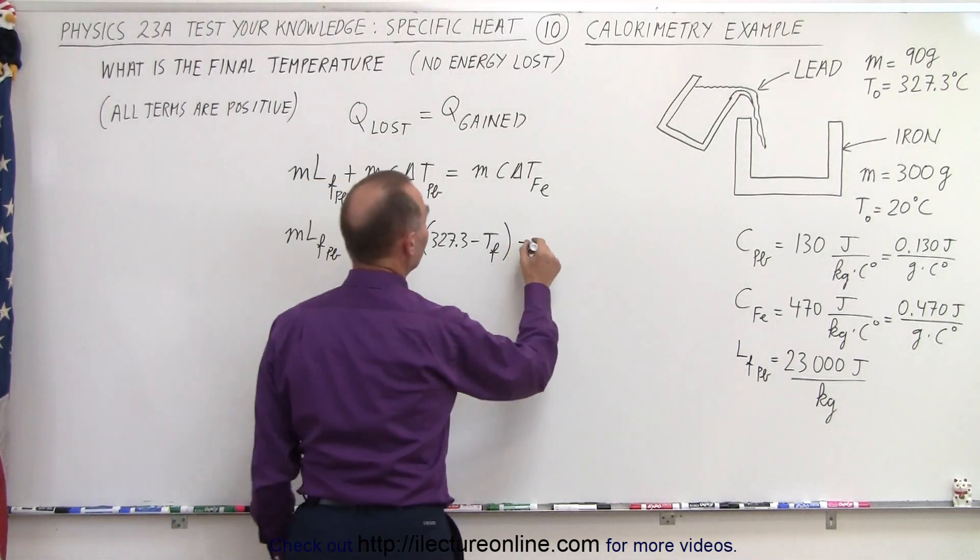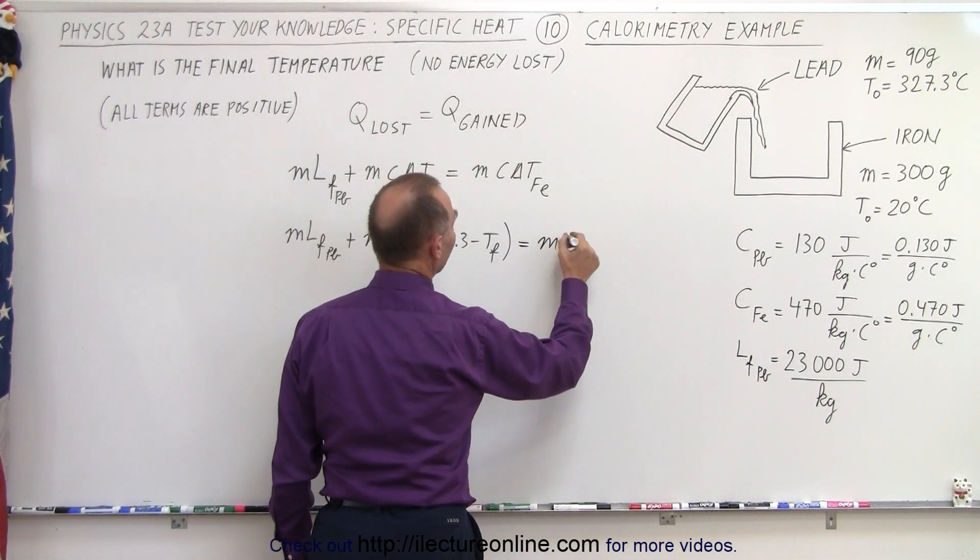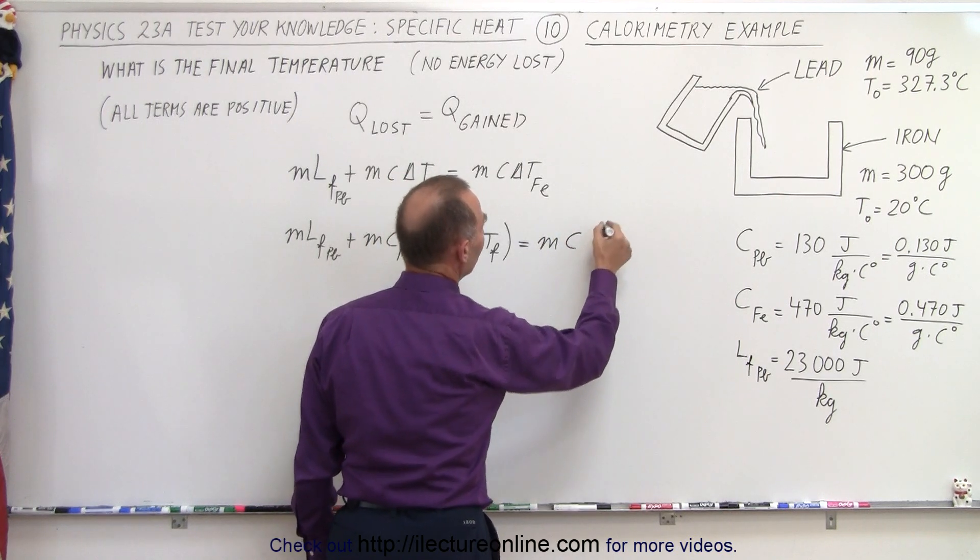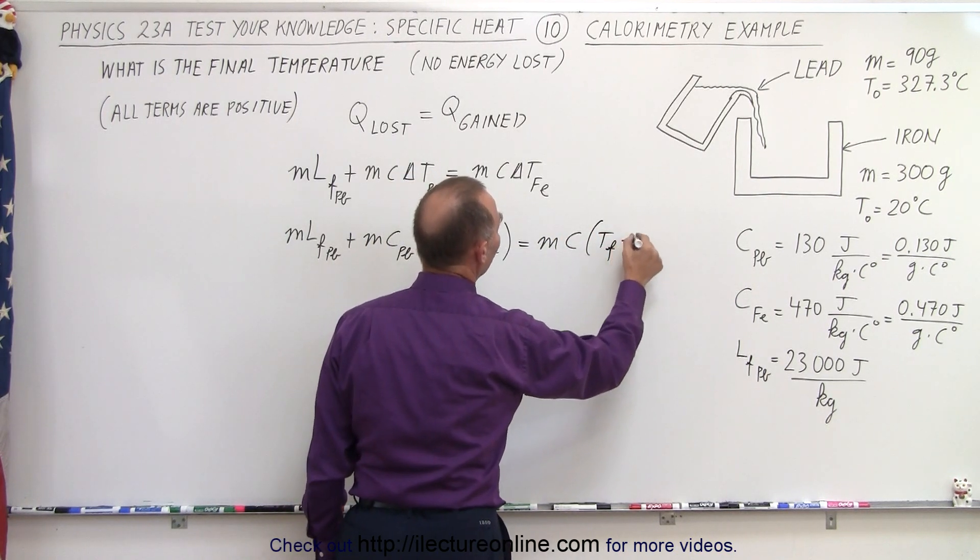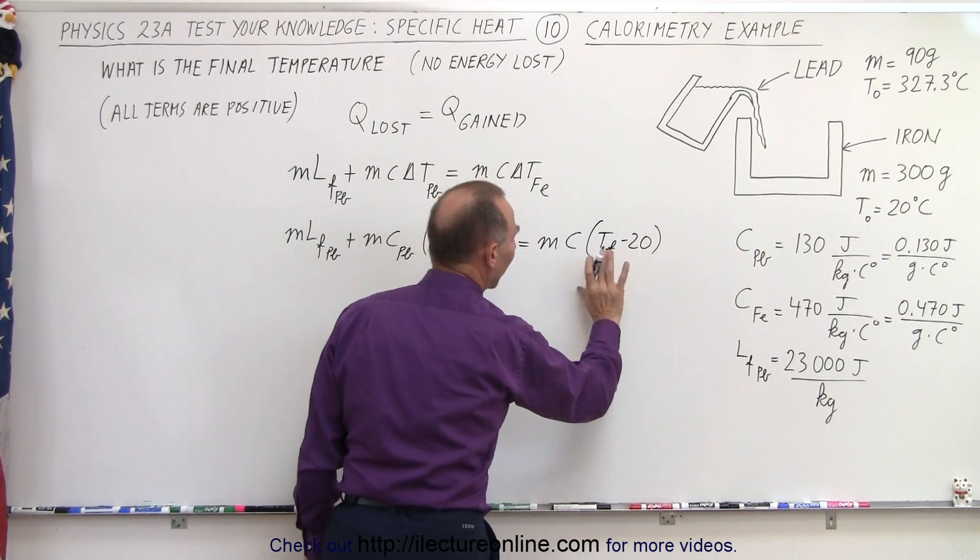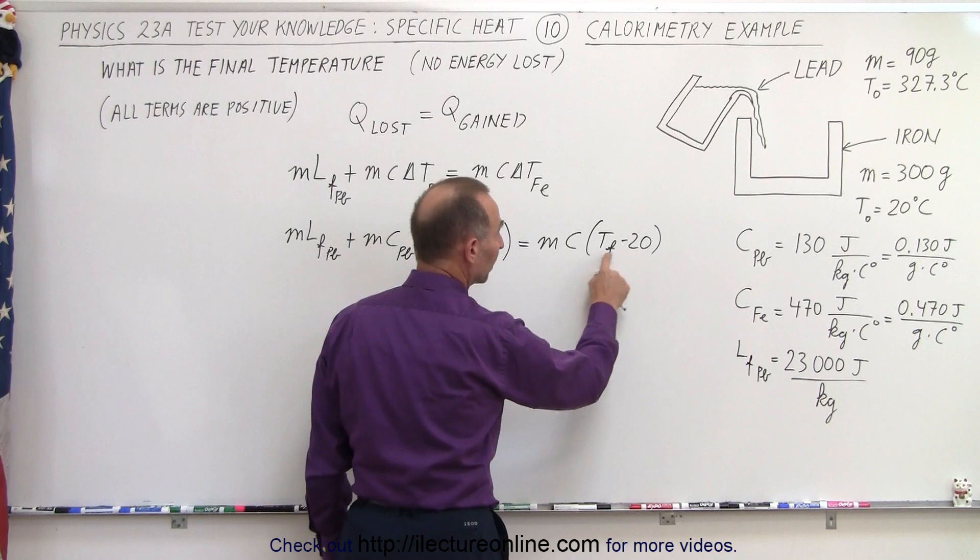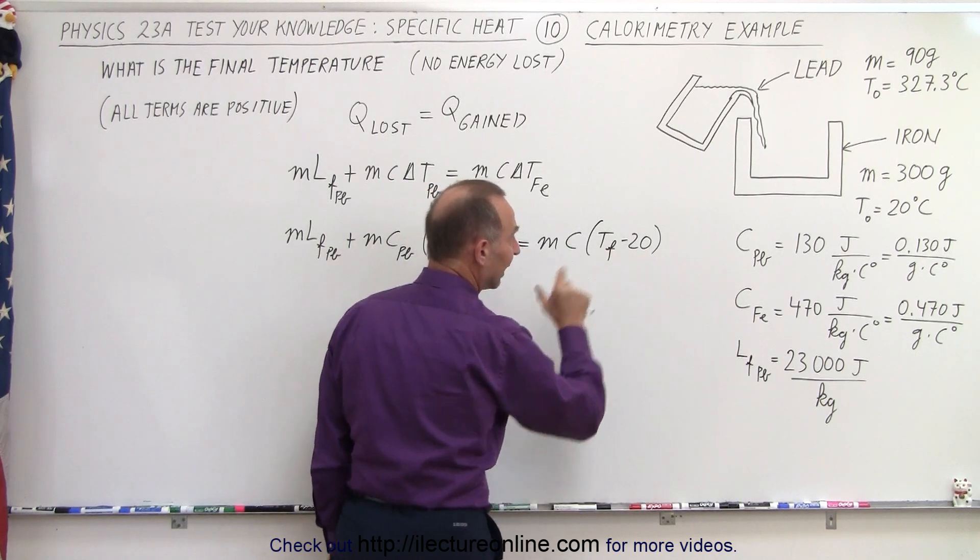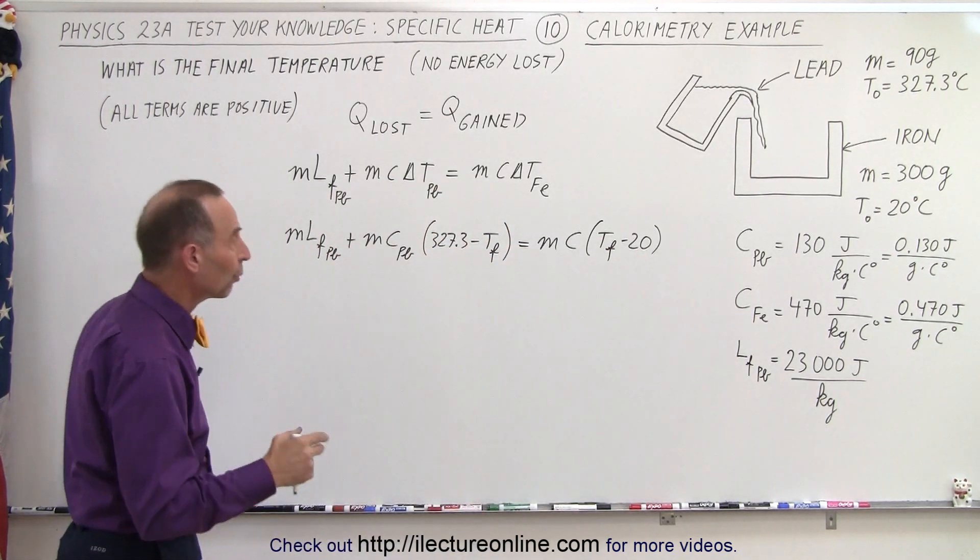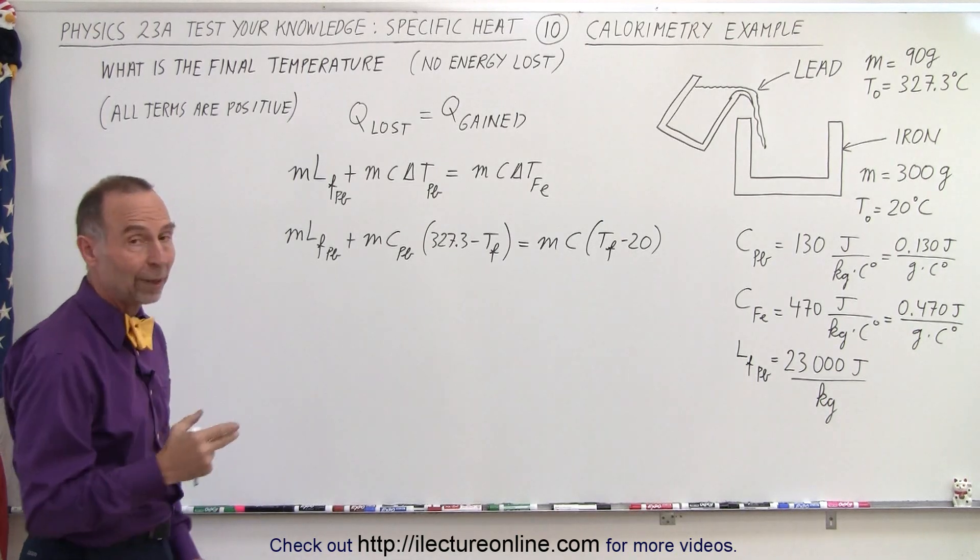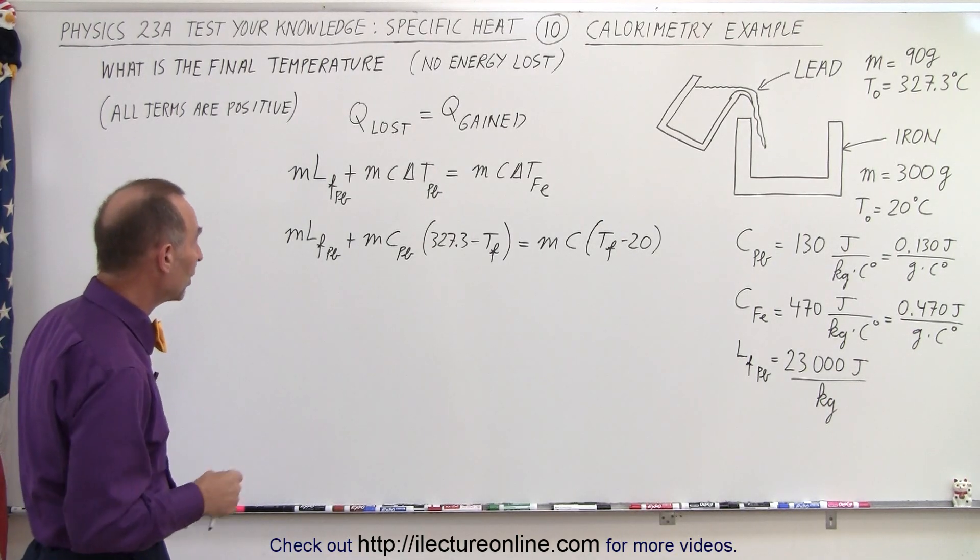Now here, that is equal to the mass of the iron, times the specific heat of the iron, times the change in the temperature, which is T final minus 20. Notice I reversed over there, because I know that the final temperature is going to be warmer than the initial temperature, and I want to end up with a positive quantity. So notice you write the delta T in such a way that each gauge should get a positive quantity.